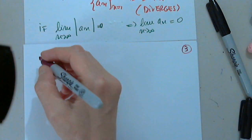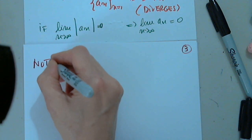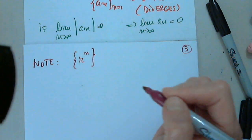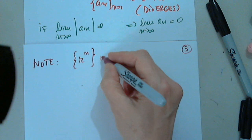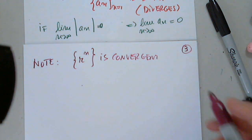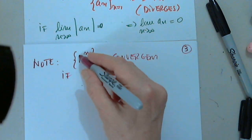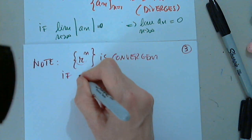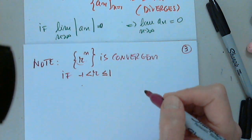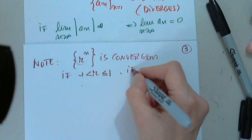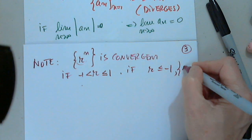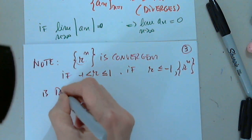Another important result to remember: if we have a general term r to the nth power, this is convergent only if r is between negative one and one. If r is less than or equal to negative one, then the sequence r to the n is divergent.